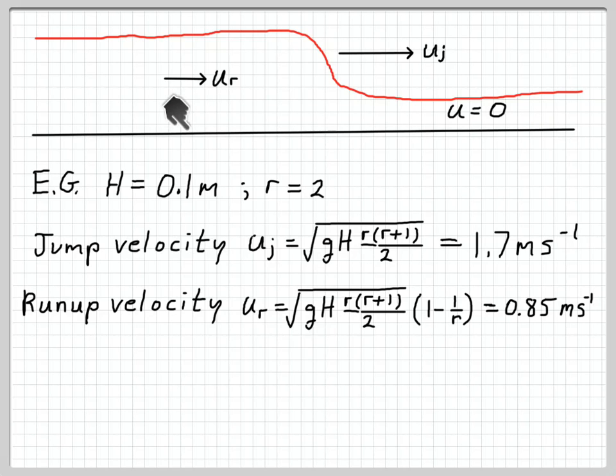Here's an example. Suppose H is 0.1 meters, so the water is 10 centimeters deep. This might be something that you would see on the Oregon coast, on a fairly gentle beach. Suppose that the wave is an additional 10 centimeters high, so the deepening ratio, r, is 2. You can figure out the velocity of the wave traveling through the water. Note that if it was just a linear long wave, then the velocity of the wave would be root GH, which is just 1 meter per second with these parameters. But in this case, the wave velocity is faster than that. It's 1.7 meters per second. The run-up velocity, the velocity of the flow behind the wave, turns out to be just half of that, 0.85 meters per second.